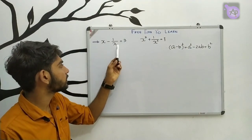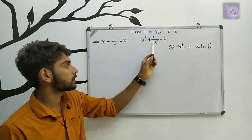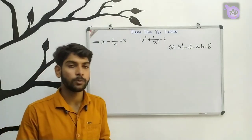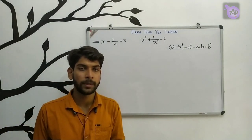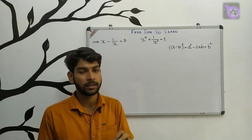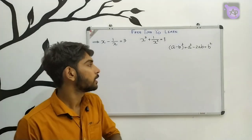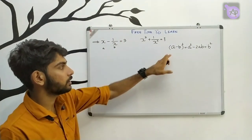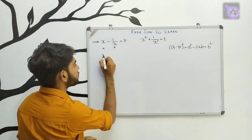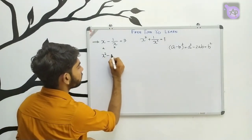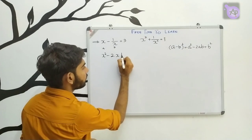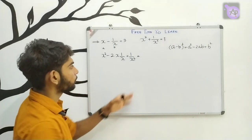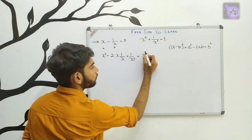Next: x minus 1 by x equals 3, find x squared plus 1 by x squared. We use the formula: a minus b whole square equals a squared minus 2ab plus b squared. Expanding: x squared minus 2 into x into 1 by x plus 1 by x squared equals 3 squared.